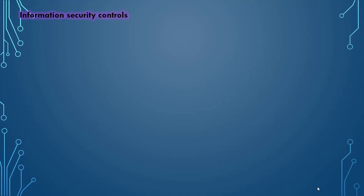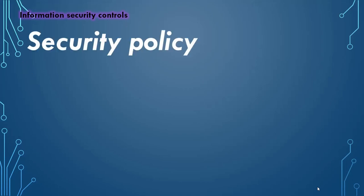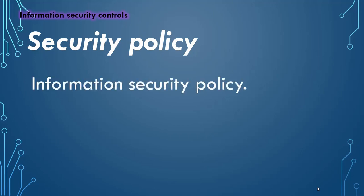Let's delve into the information security controls as defined and outlined by ISO IEC 27001. Let's first discuss A5 security policy. Security policy fundamentally mentions the need of having an information security policy and different controls to be associated with it. The objective of this policy is to provide management direction and support for information security in accordance with business requirements and relevant laws and regulations.